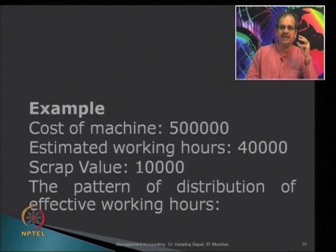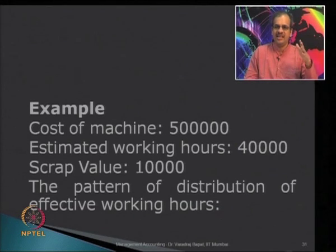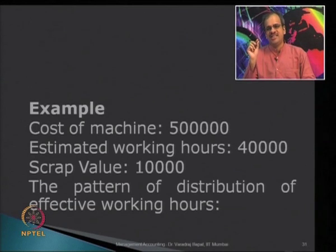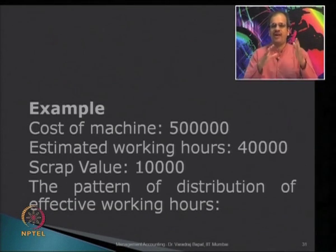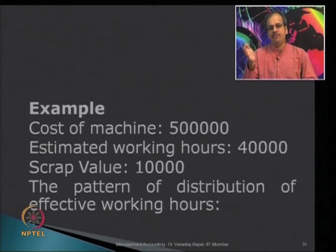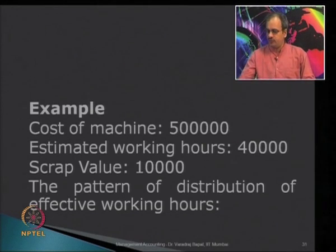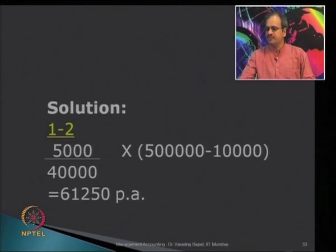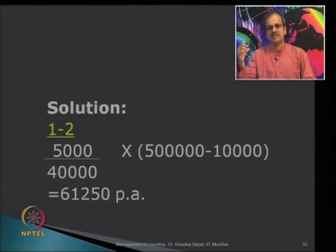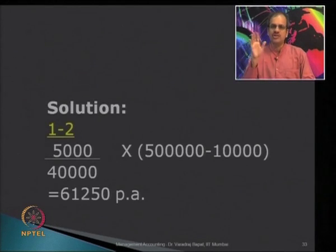First, calculate the depreciation amount over the life: 50,000 minus 10,000 scrap equals 40,000 as the depreciable amount. Over the life we know that 40,000 is the total number of hours. So 40,000 divided by 40,000 gives the hourly rate. In years 1 and 2, usage is expected to be 5,000 hours, so 5,000 upon 40,000 into 40,000 gives depreciation of 5,000 per annum — or as shown in the solution, 61,250 per annum.